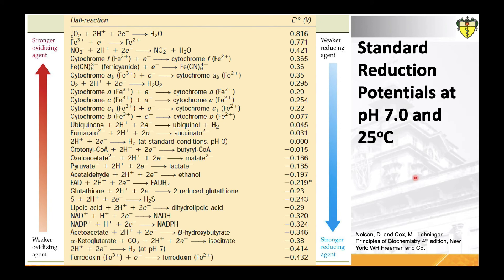This table lists the standard reduction potentials of various half-reactions of oxidation-reduction reactions occurring in the cell. The standard reduction potential measures the tendency of a chemical species to acquire electrons and thereby be reduced. Ferredoxin has the greatest tendency to donate electrons, having the lowest — most negative — standard reduction potential, at −0.432 V, followed by hydrogen at −0.42 V. Oxygen, on the other hand, has the highest redox potential at +0.82 V, indicating it has the greatest tendency to accept electrons. Therefore, oxygen is referred to as the ultimate acceptor of electrons in the cell.